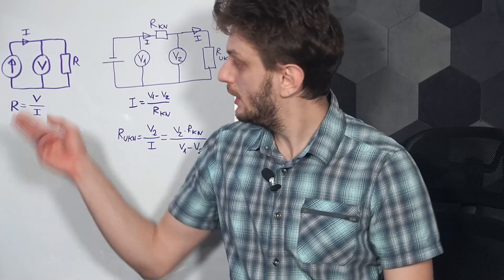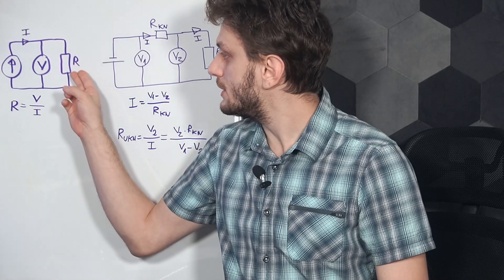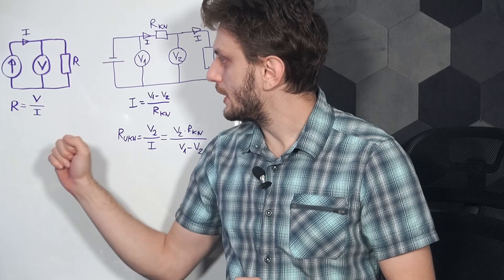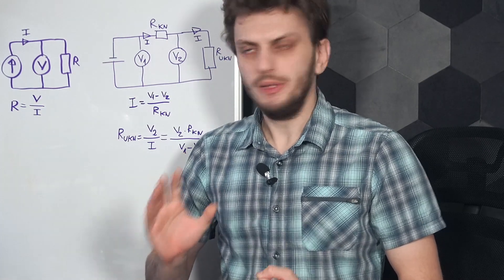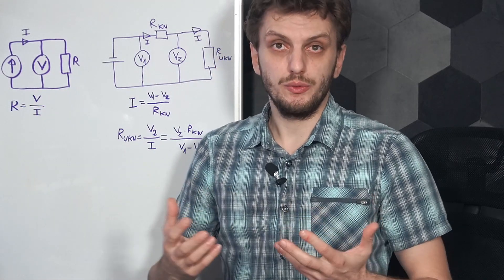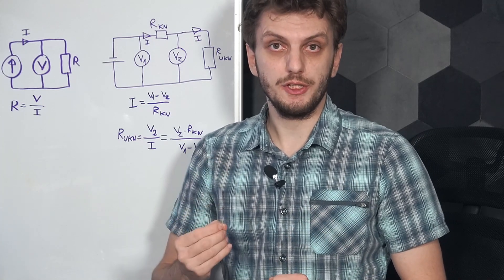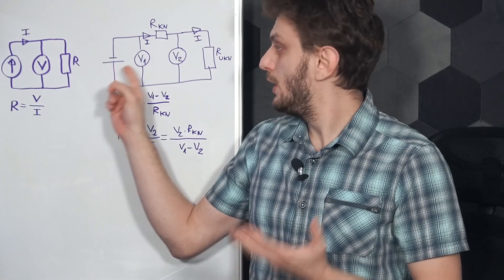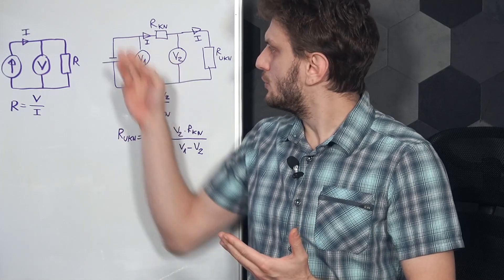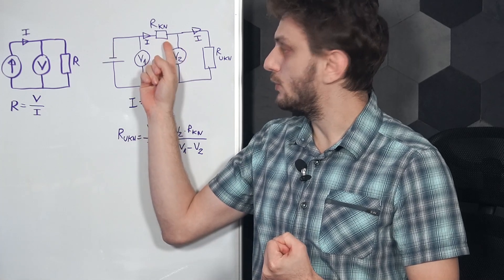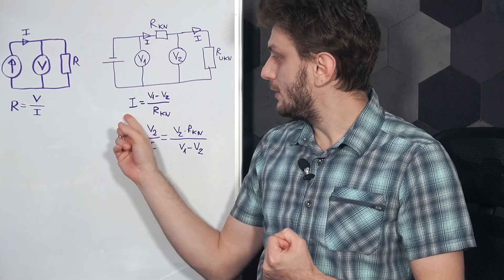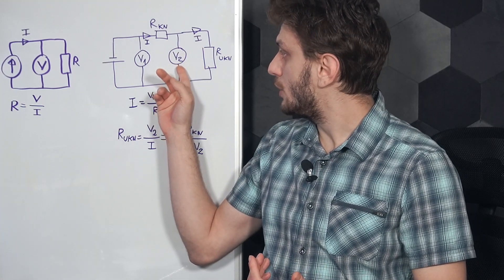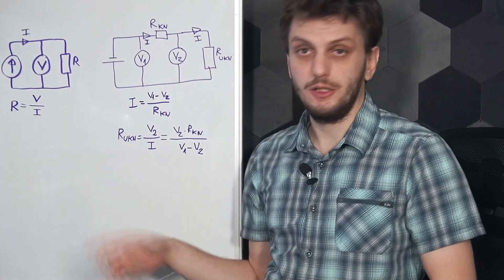The basic measurement circuit would look something like this: we have a current source of known value that feeds our unknown resistor, and we use a voltmeter to measure the voltage drop on it. By taking the two values into account we can calculate the value of said resistor. But building a current source of known value isn't that easy, so to remove that headache we can replace the current source with a voltage source and use an extra known resistor. Now we either know the value of the voltage source or we measure it using an extra voltmeter. By knowing the two voltage values we can work out the voltage drop on our known resistor, calculate the current passing through it — and therefore through the unknown resistor — and from that work out the unknown resistor's value.